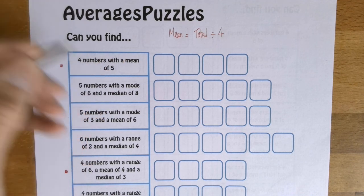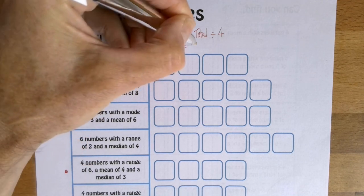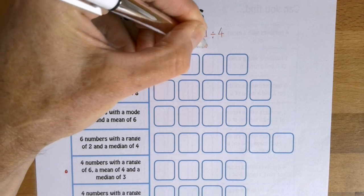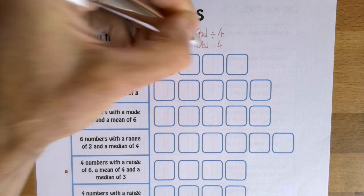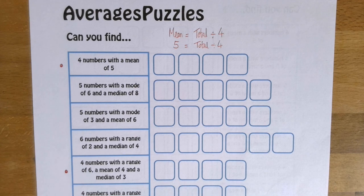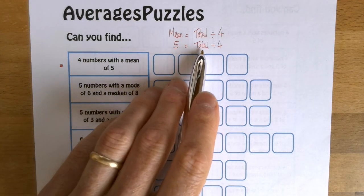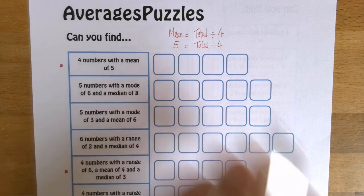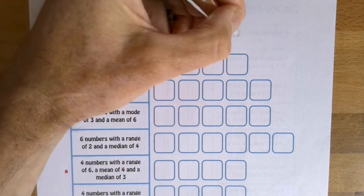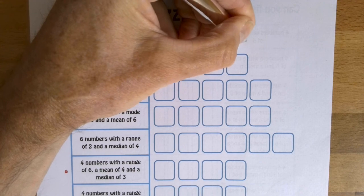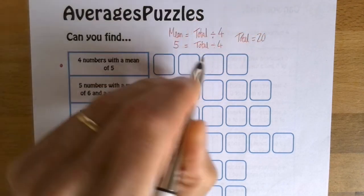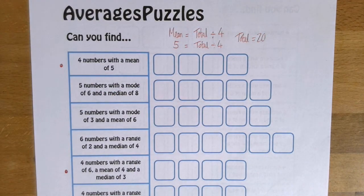Now, we're told that these numbers need to have a mean of five. So we know the mean is five, and we know there are four numbers, but we don't know the total. And I'm hoping that you'll be able to work out what the total is. Something divided by four is five. That must mean that the total has to be 20 because 20 divided by four is five.